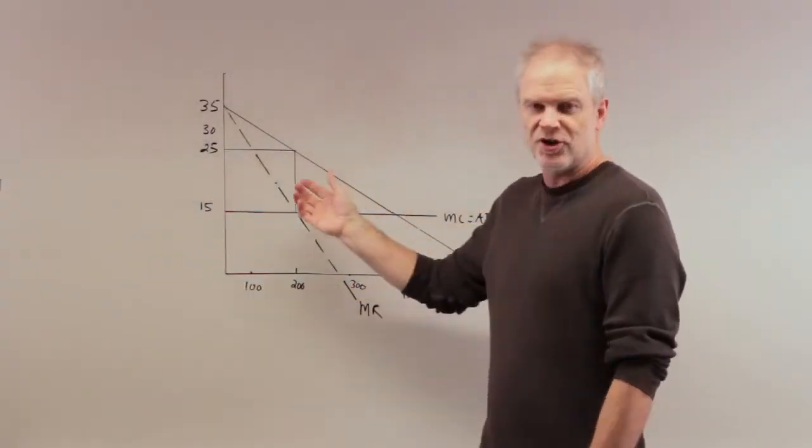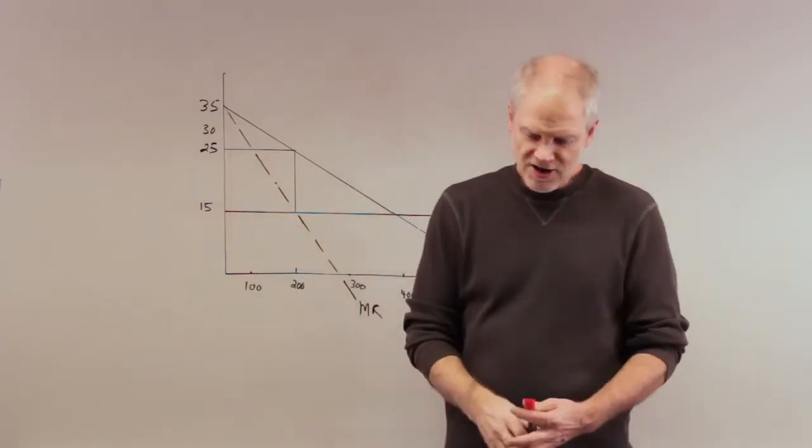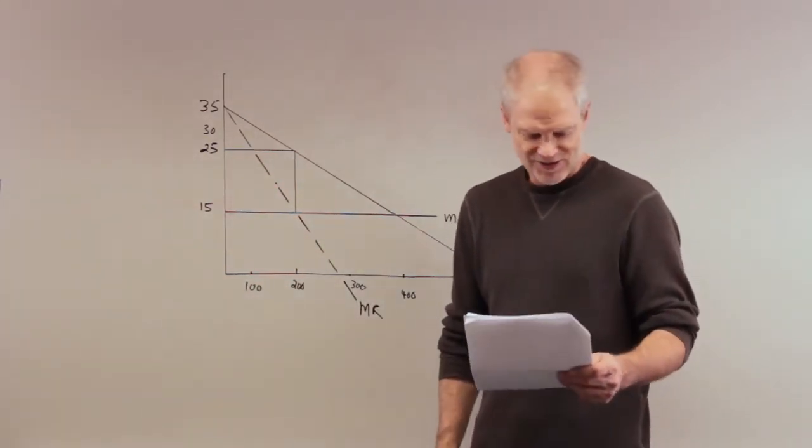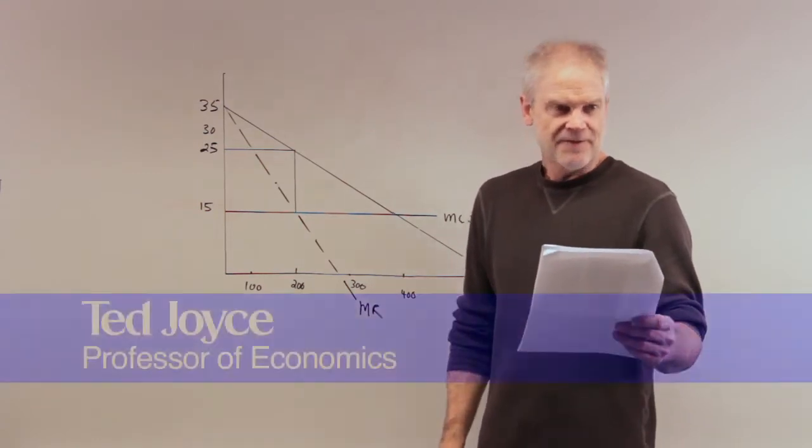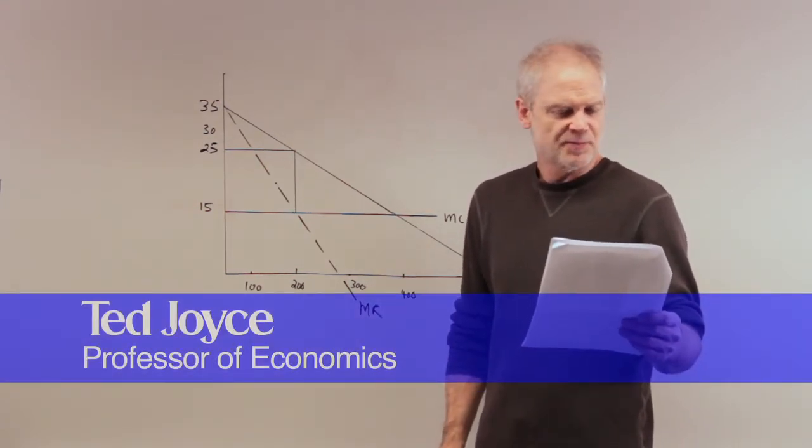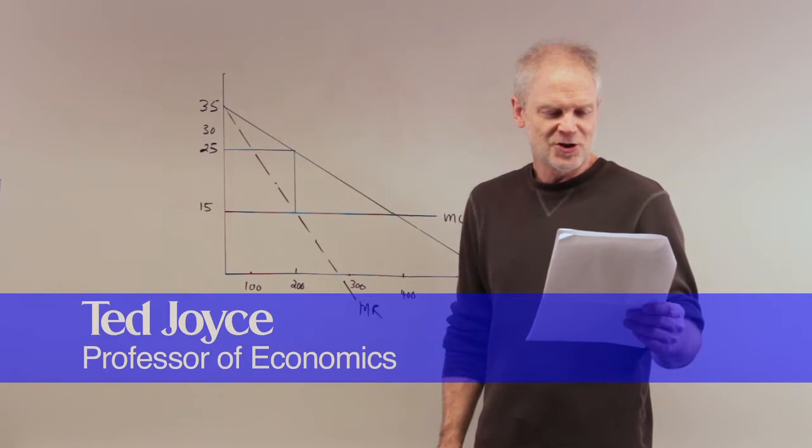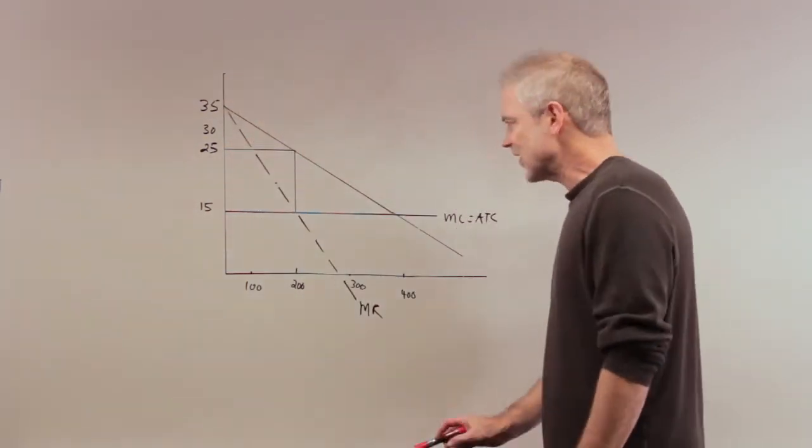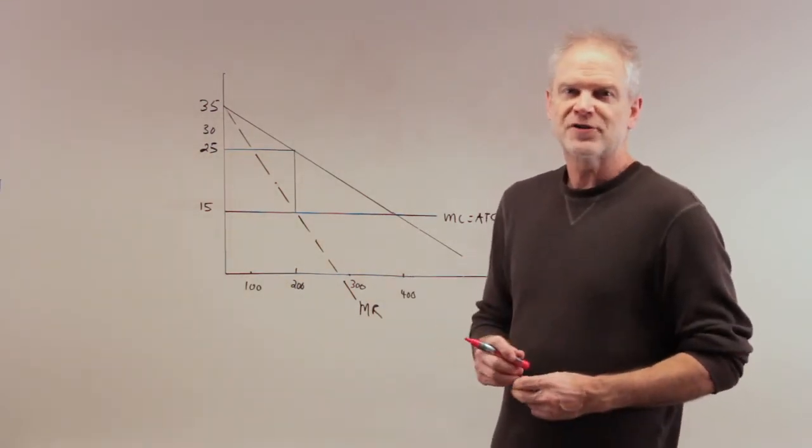The last four questions are going to use this diagram here. Question 15 asks: if the monopoly is not allowed to price discriminate, then consumer surplus amounts to what? All right, so the monopolist can't price discriminate, so what do they do? What price will make them the most money?